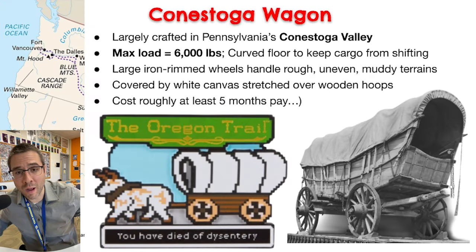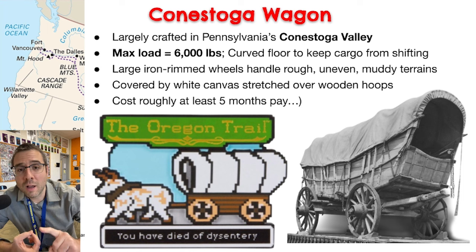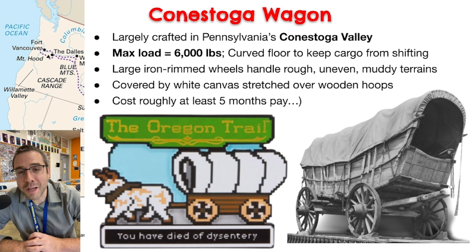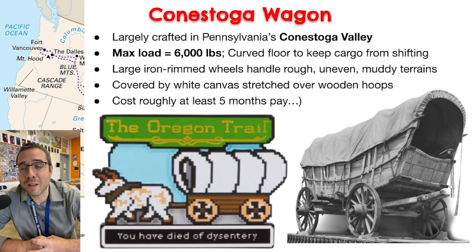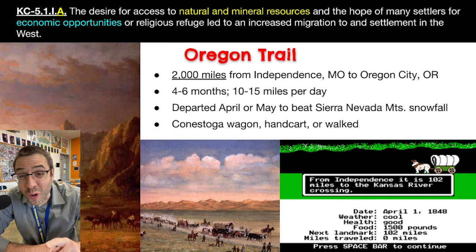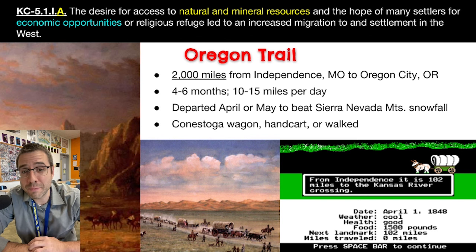So how were people getting out far west at this time? The answer is they were either walking, on horseback, by hand cart, or most famously, the Conestoga Wagon. Made in the Conestoga Valley of Pennsylvania, this wagon is rough and tough — it has iron-rimmed wheels to handle any terrain and a 6,000-pound load capacity, so it could carry a lot of people and supplies out west, but it was very expensive. The trip out west took about four to six months on average, traveling about 10 to 15 miles per day. You needed to leave early — like April or May — if you wanted to get through the Sierra Nevada mountain passes before snowfall came in around October.